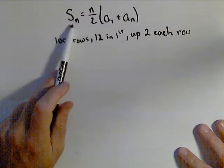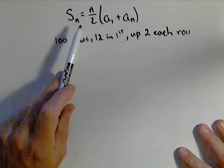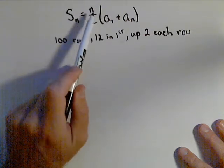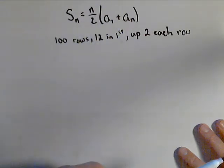This is the formula for the first n terms of any finite arithmetic series. It's the number of terms over two times the first plus the last term: S_n = n/2(a_1 + a_n).